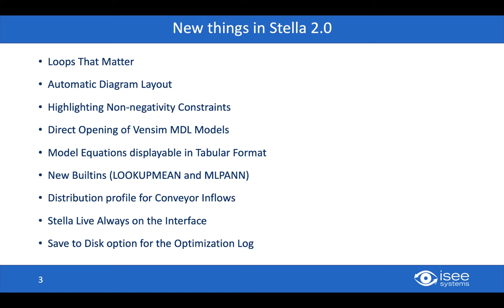Also new is the ability to display your model equations in a tabular format in the equation viewer. We've added two new built-ins: Lookup Mean, which treats your lookup as a probability distribution function, and MLP ANN, which stands for Multilayer Perceptron Artificial Neural Network, so that you can set up neural nets inside of your SysDynamics models. We've also added new distribution profiles for conveyor inflows, features to always have Stella Live be on, and an option to save the optimization log to disk.